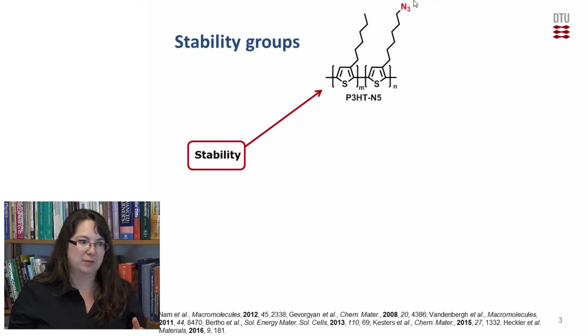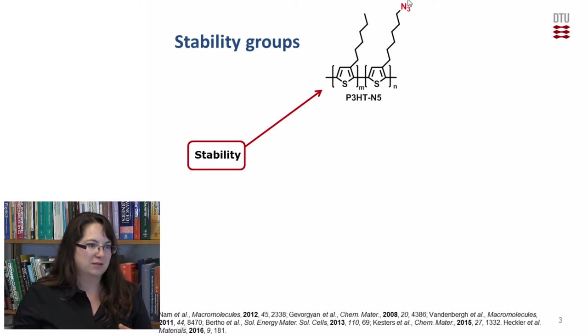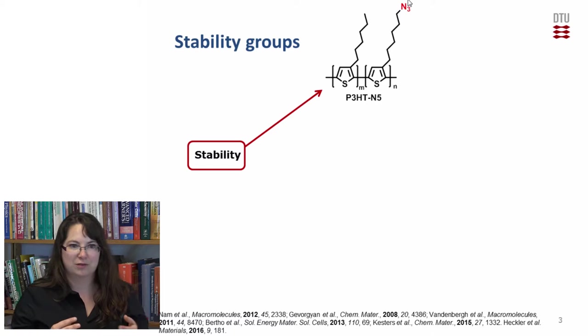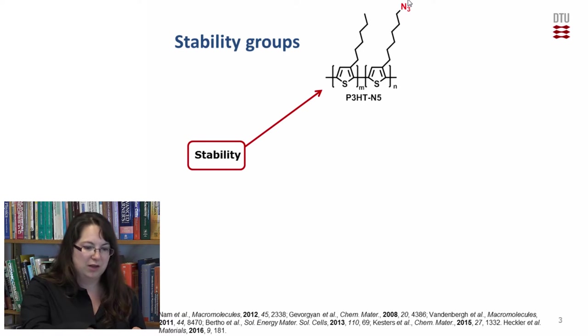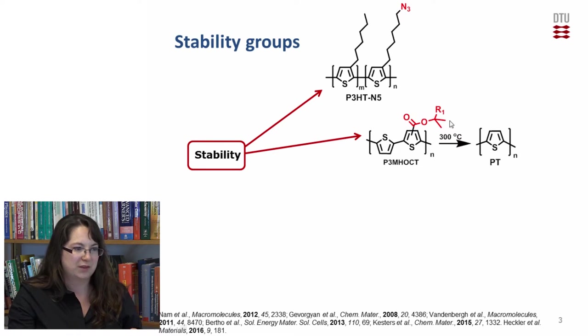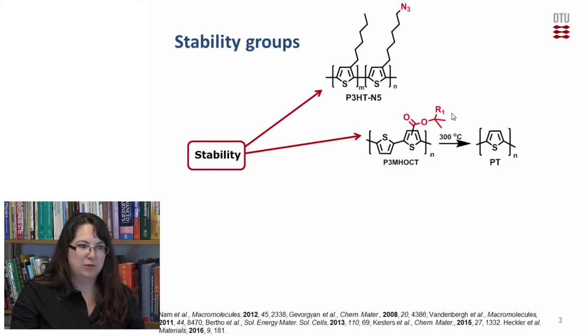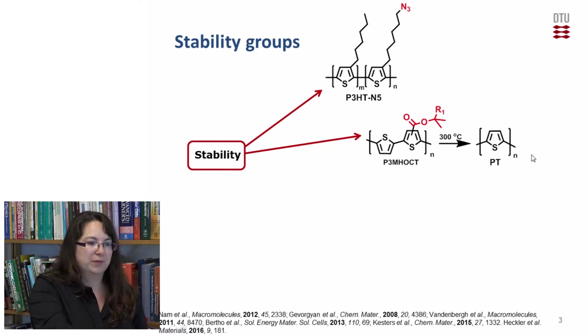And to undergo this phase separation there are different strategies. The morphology for example can be frozen by cross-linking of this azide group which means that we get a frozen morphology and it's more stable and heat doesn't have so much influence and cannot phase separate it. Another strategy is to use this ester group which is cleavable with heat.